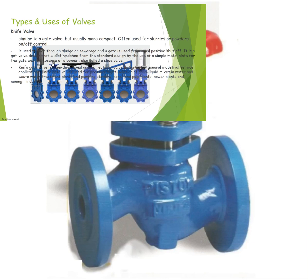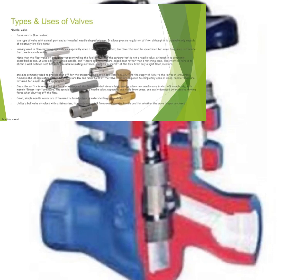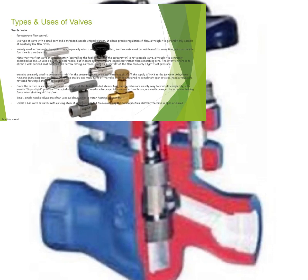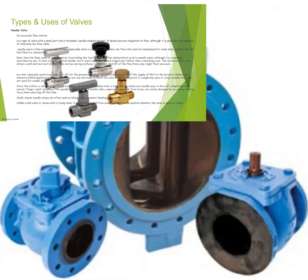The next one is a needle valve, used for accurate flow control. It is a type of valve with a small port and a threaded needle-shaped stem. It allows precise regulation of flow, although it is generally only capable of relatively low flow rates.